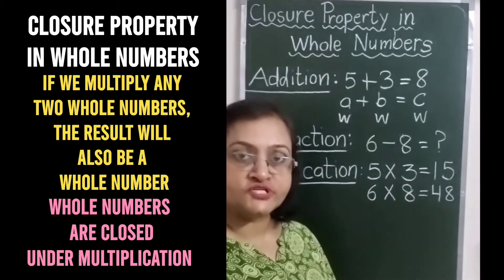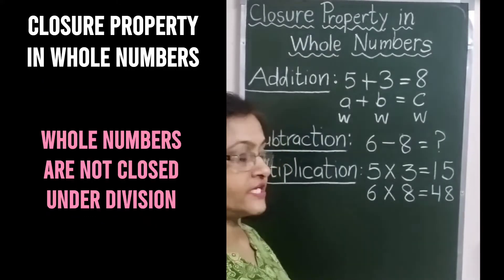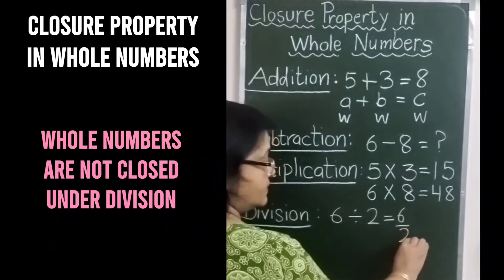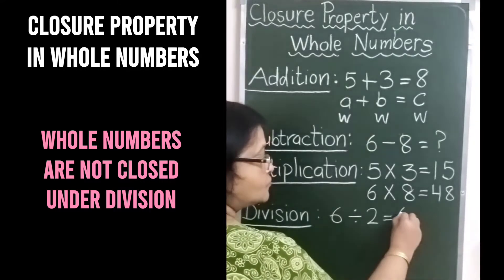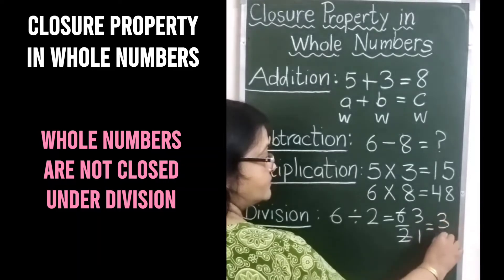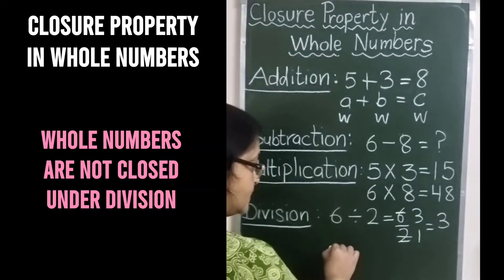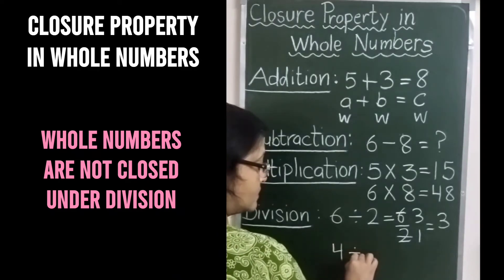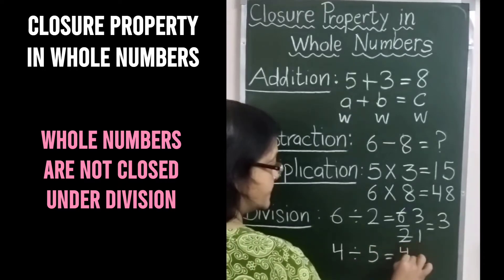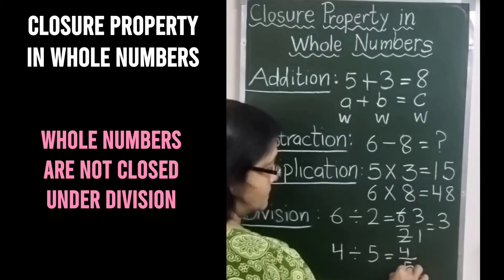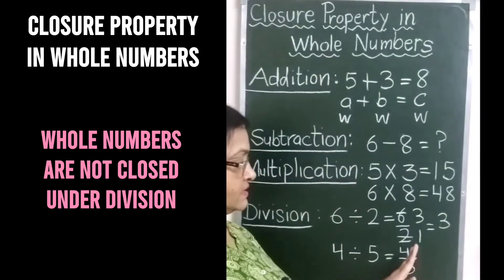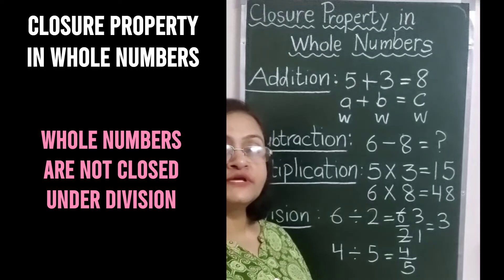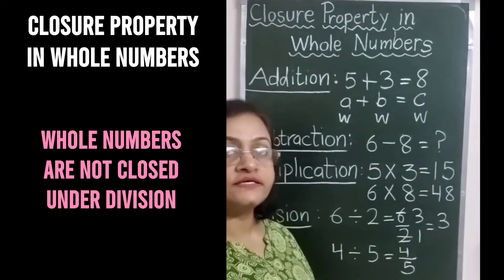But is it true for division also? क्या division में भी ये बात सही होगी? Let's check. 6 divided by 2 — we can write it this way: 2 threes are 6, which equals 3, which is a whole number. But if we want to divide 4 by 5, it will be written like this — 4 upon 5 is not a whole number. So division is not closed here; whole numbers are not closed under division.